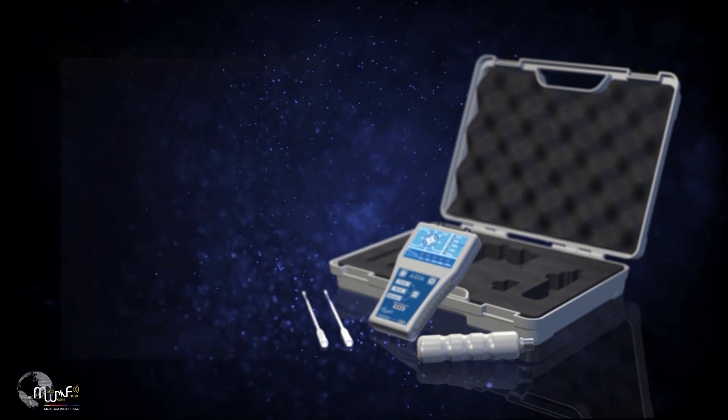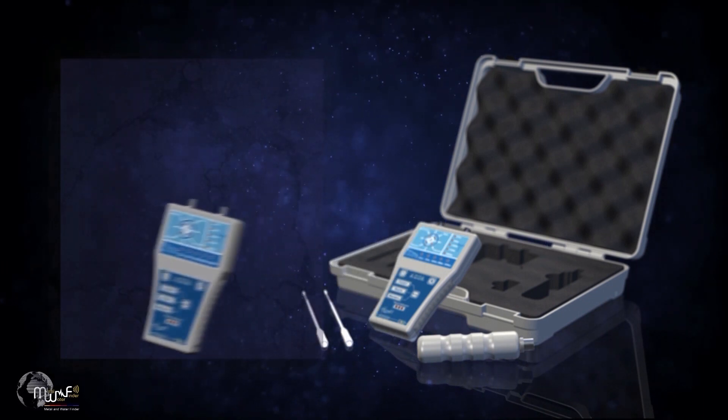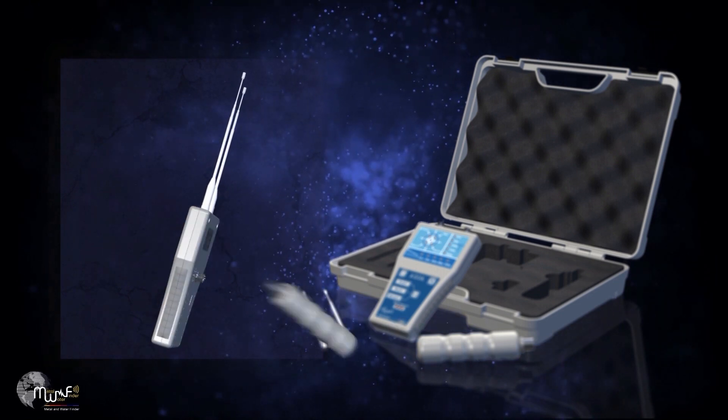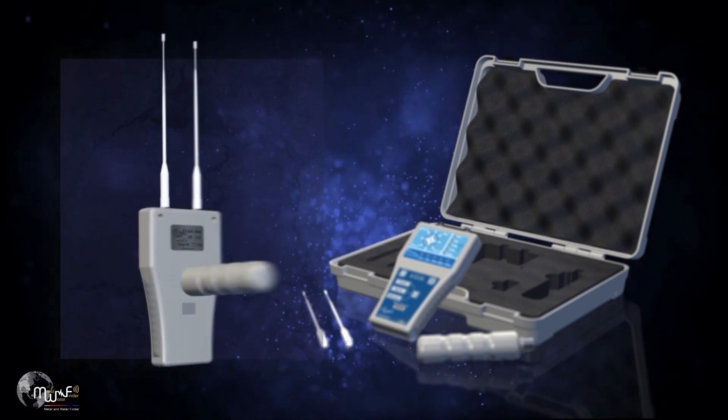How to install the device? Connect the telescopic antennas to their own places in the front of the front part of the device. Plug the handle into its socket at the bottom of the device.